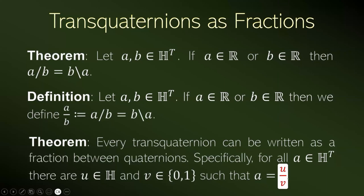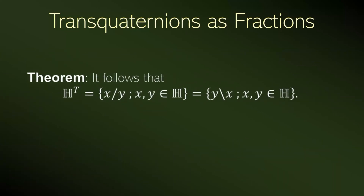And finally, we have the theorem of this section: all transquaternion numbers can be written as a fraction with right division of quaternion numbers and also with left division of quaternion numbers. So every division between quaternion numbers is allowed in transquaternions, including division by zero — right and left division.